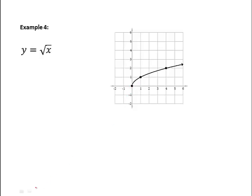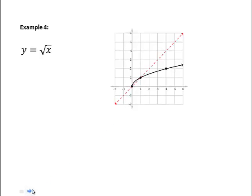If we found the reflection of that graph over the line y equals x, we would find these three points. Again, no negative x values. And it looks like we only have half of a parabola. So when we go through our algebra, we want to make sure that we keep that consistent with our graph.